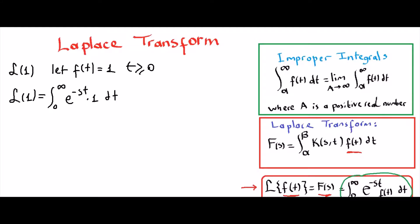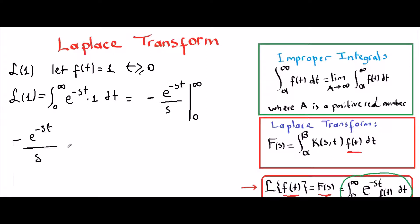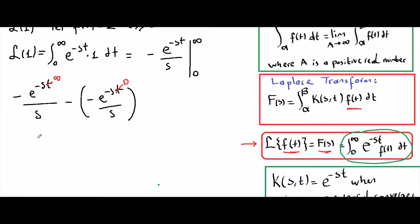Now we are going to solve this integral. The anti-derivative of e to the negative st is negative e to the negative st over s, which is like negative 1 over s times e to the negative st. We evaluate from 0 to infinity, giving us negative e to the negative st over s, evaluated with upper boundary infinity and lower boundary 0.